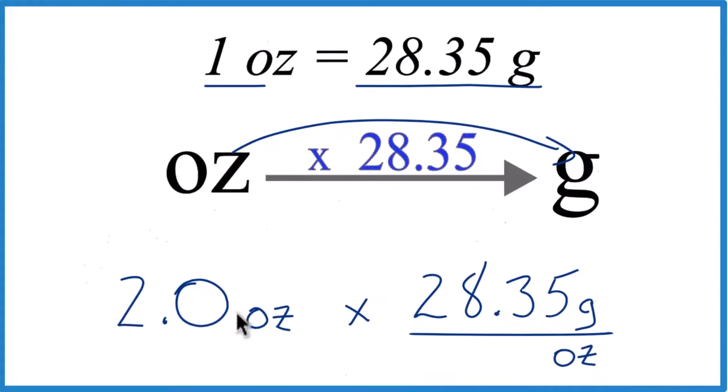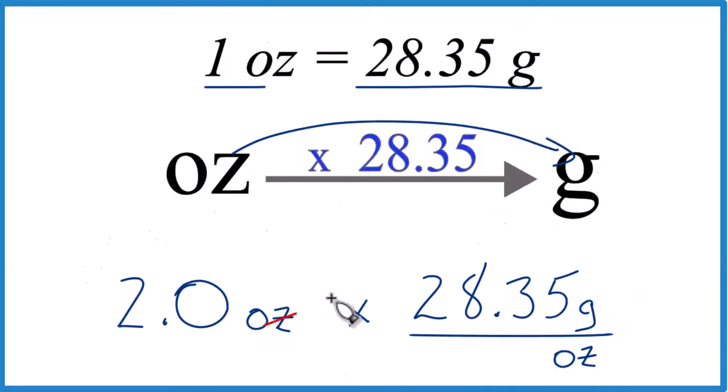Note that ounces is on top and on the bottom here. This is our conversion factor. There are 28.35 grams in one ounce, just like we have it here, grams per ounce. Now we can cross ounces out.